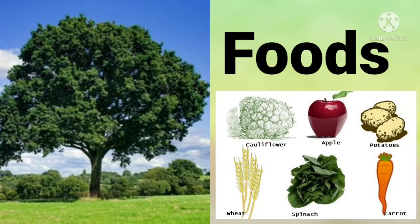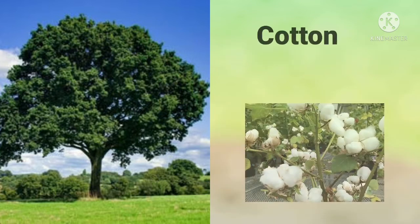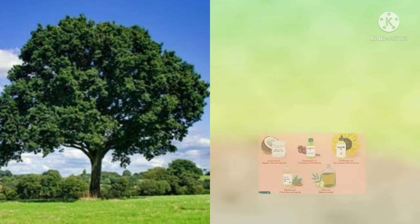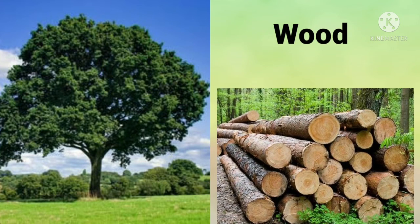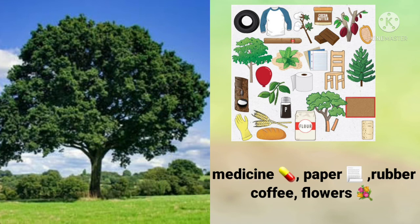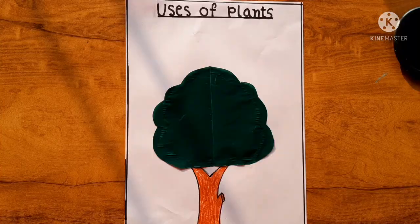Plants provide food for people and animals, like vegetables, fruits, and pulses. Plants also provide cotton, oil, shelter, wood, and many other necessities of life like medicine, paper, rubber, and coffee beans. People also use flowers for decoration. So human beings use plants in countless ways.